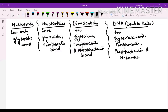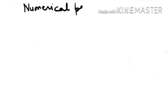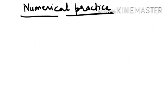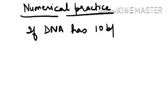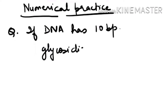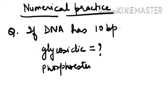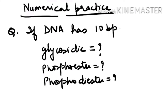Now let us revise with a few practice questions. If DNA has 10 base pairs, you have to find: how many glycosidic bonds are there, how many phosphoester bonds, how many phosphodiester bonds, and the minimum number of hydrogen bonds.